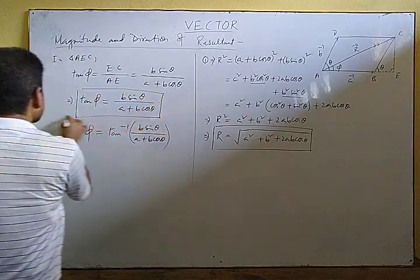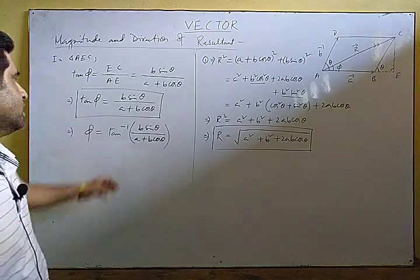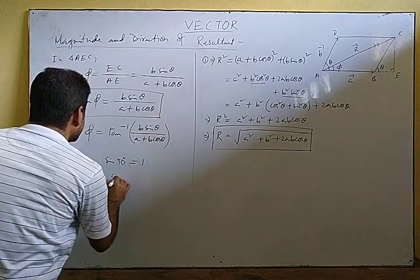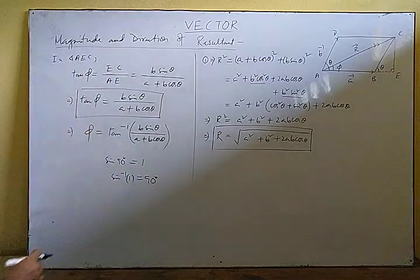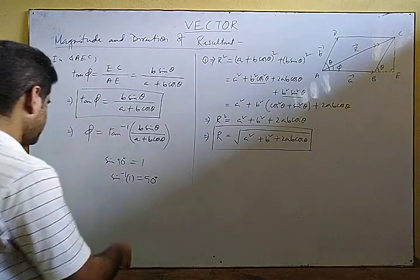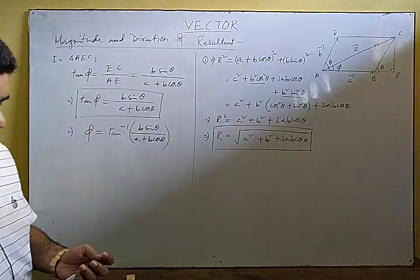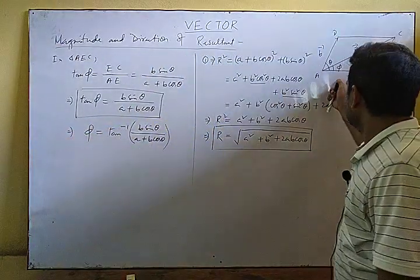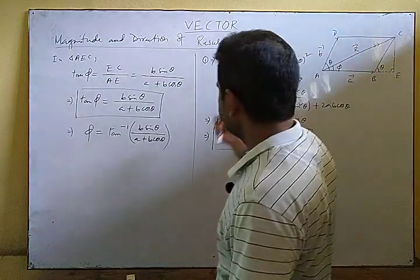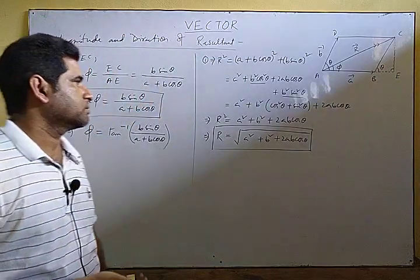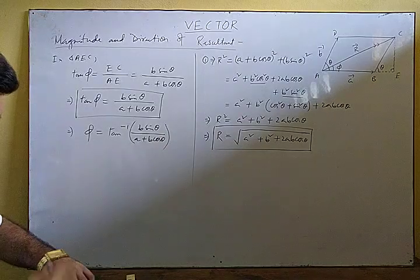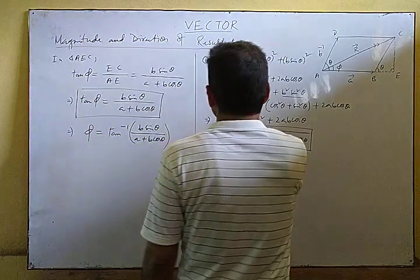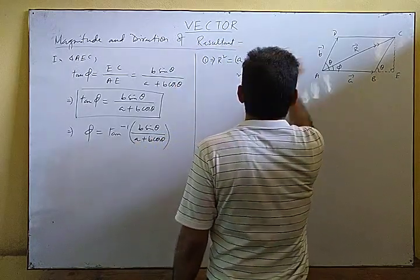So tan φ = B sin θ / (A + B cos θ) is the directional formula. Using the inverse tangent function to find the angle φ, this gives the direction of the resultant. This formula is valid for the parallelogram law of vector addition.